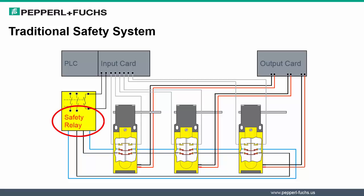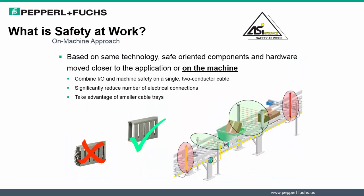The safety relay was an external yet essential component in conventional hardwire systems, which added further to additional wiring requirements. So, what is safety at work? Well, it's an on-machine approach. With AS Interface technology, safety-oriented components and hardware move closer to the application, or actually on the machine. Combining I/O and machine safety on a single two-wire cable simplifies designs and reduces installation time and cost. By reducing the number of electrical connections, cable trays can be significantly smaller and sizes of panels significantly reduced.